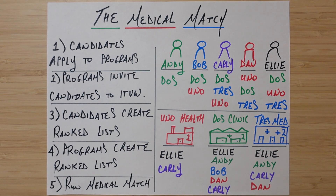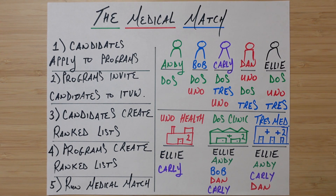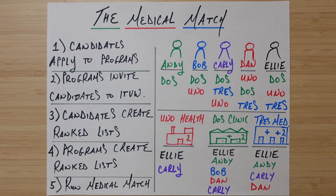Hey folks, welcome back. I don't know if I told you, but I studied economics back in the day, and a lot of the beginning of that education was typical stuff like supply and demand. But towards the end of my education, I got to study much more interesting things like auction design and market design. And that's what I want to talk about today — one of the most interesting applications of a market design algorithm I've ever seen, which is what's used to match medical students to residency programs in the United States, called the medical match.